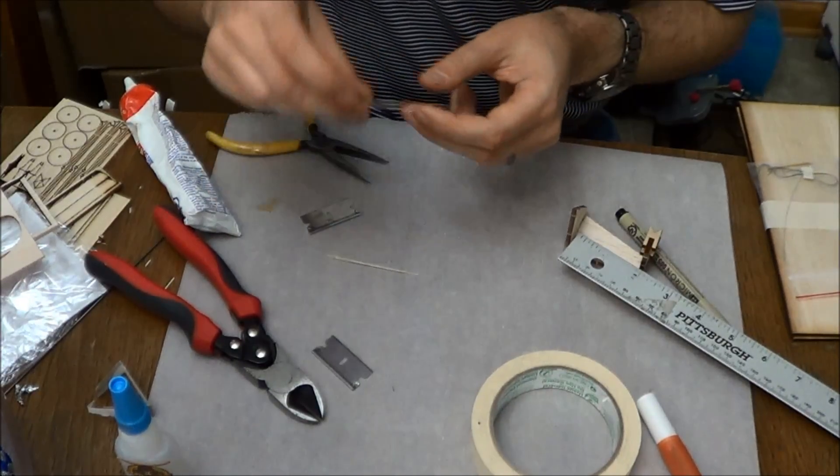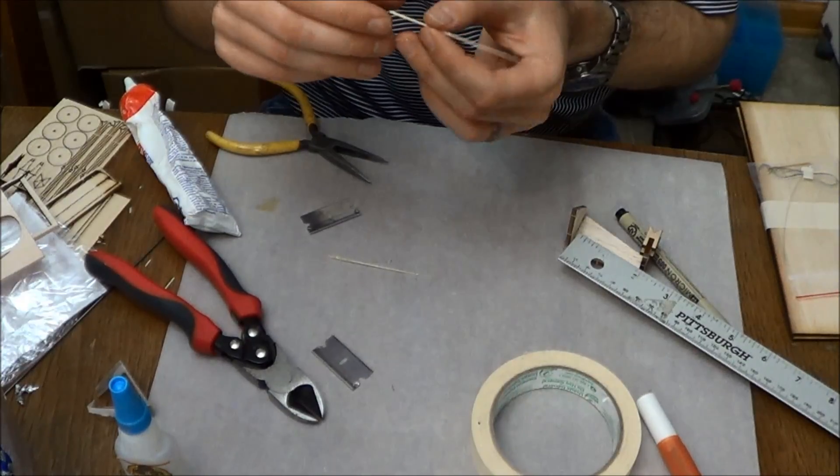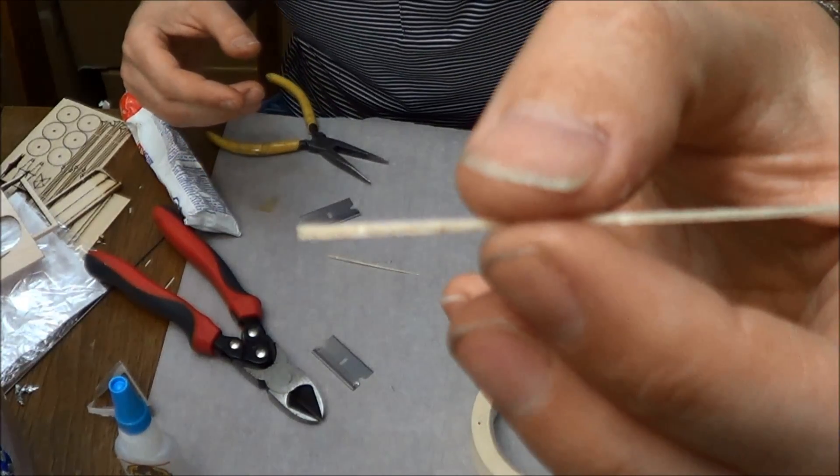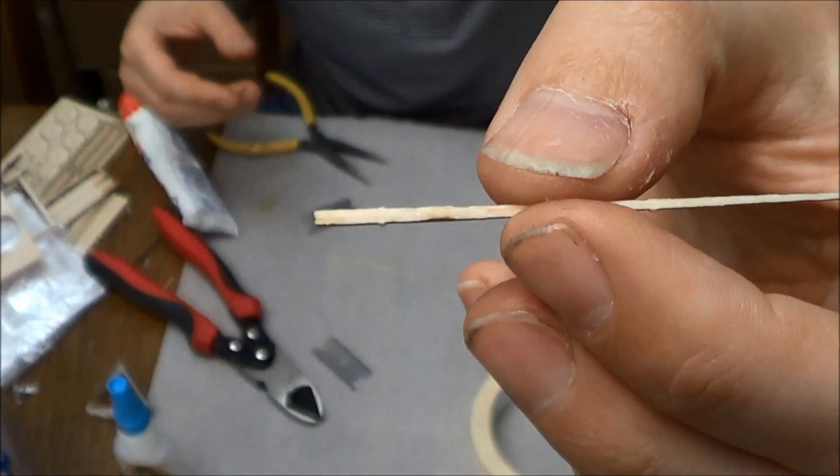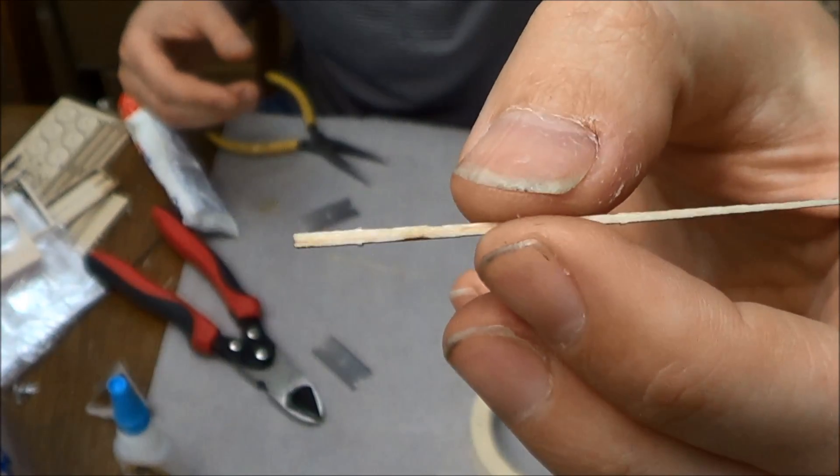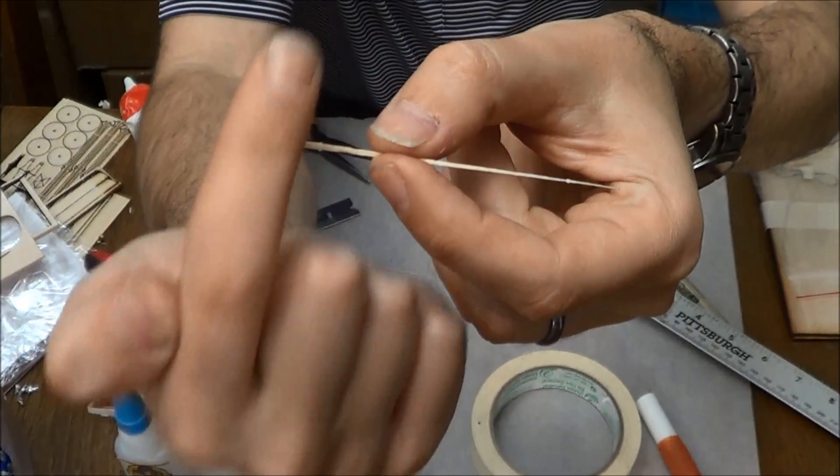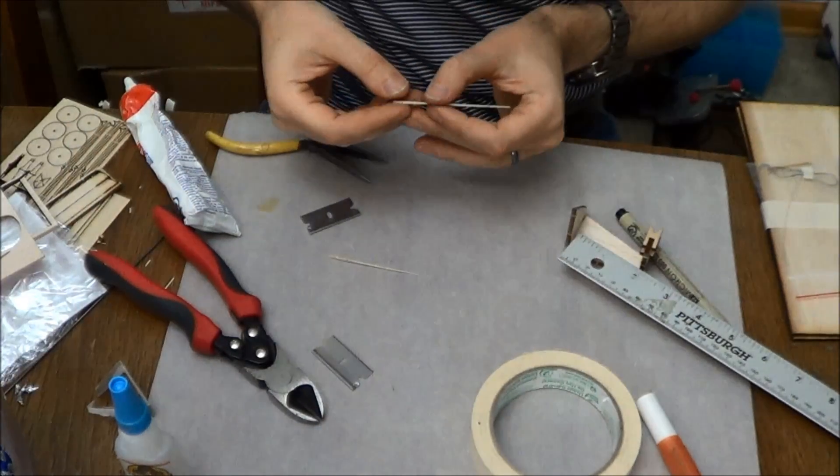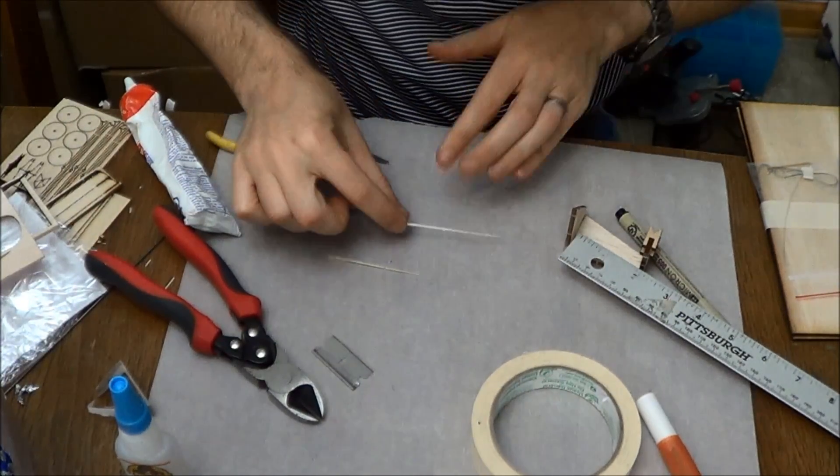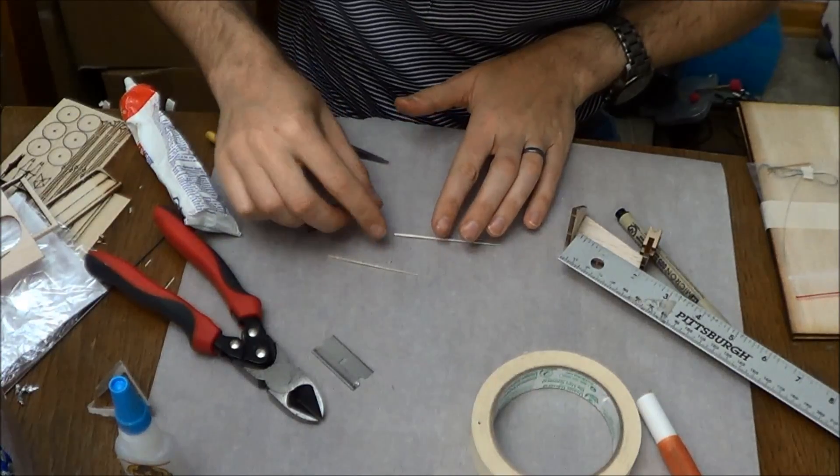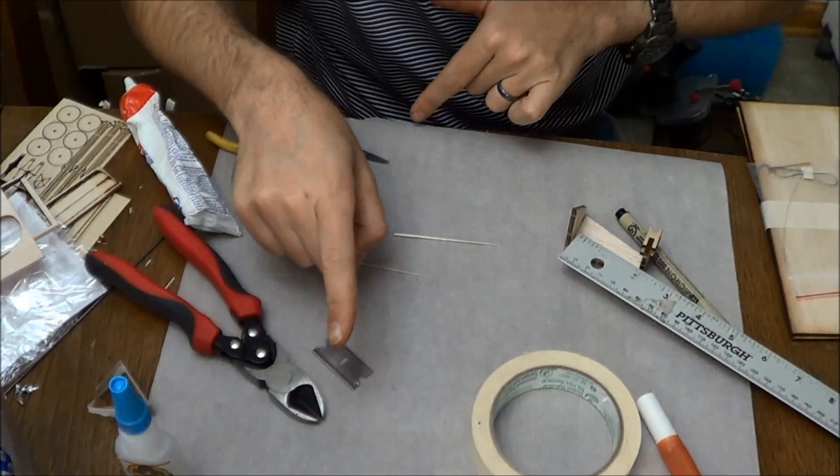So at this point, now take one of your propeller spars. And you can see there's a laser edge, like that, and a non-lasered edge, see? So this is the edge that the propeller shaft is going to align with. So when you lay this spar down, the lasered edges should be facing out like so.